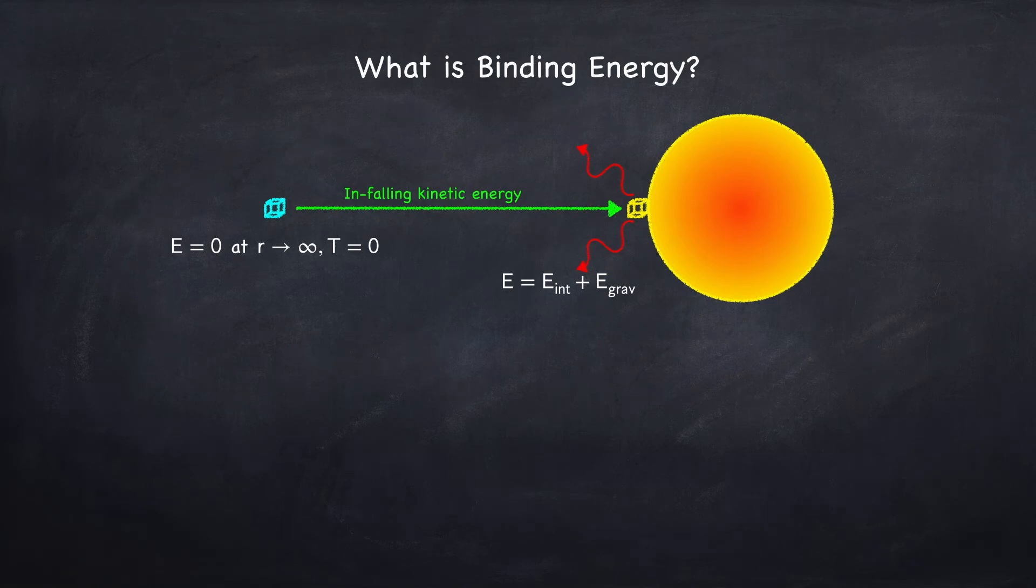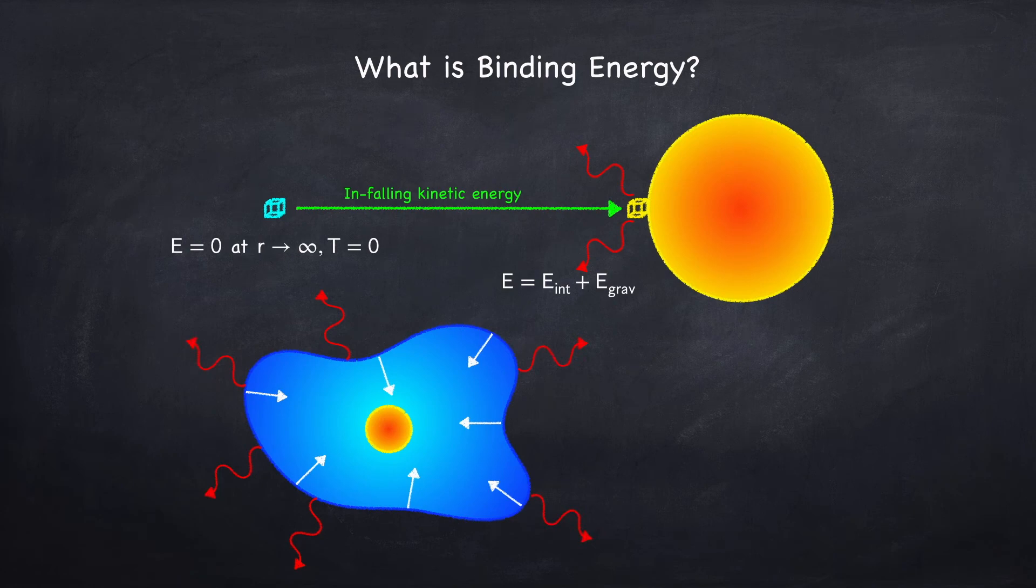Now we imagine adding up this process for every particle in the star. So we imagine a cold dust cloud that's got essentially zero energy. It collapses and in the process it radiates away some energy. And that energy radiated away will be the energy required to blow the star up.